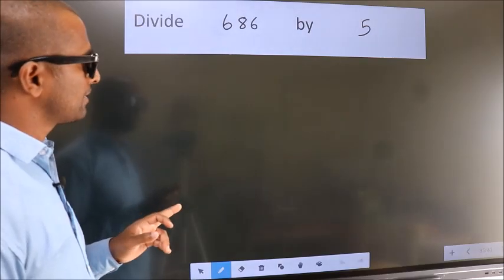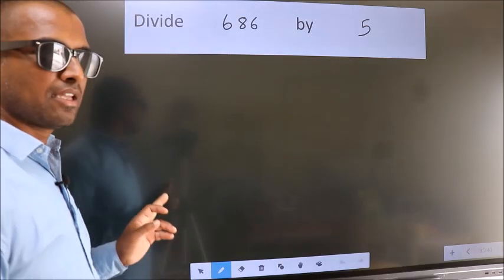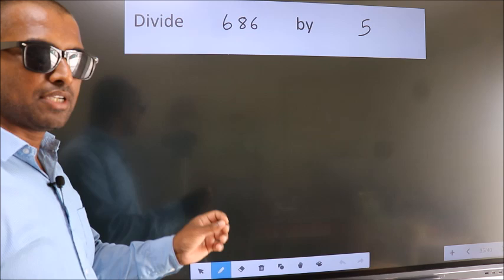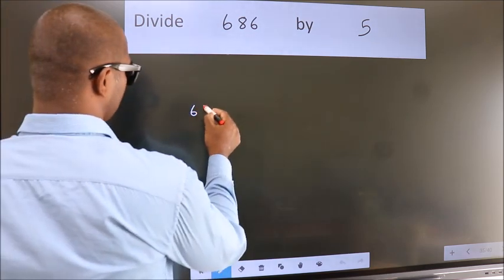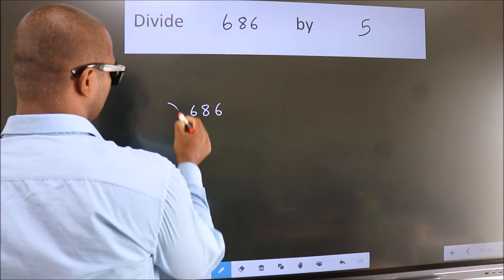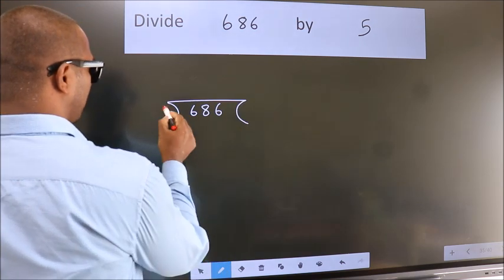Divide 686 by 5. To do this division, we should frame it in this way: 686 here, 5 here.